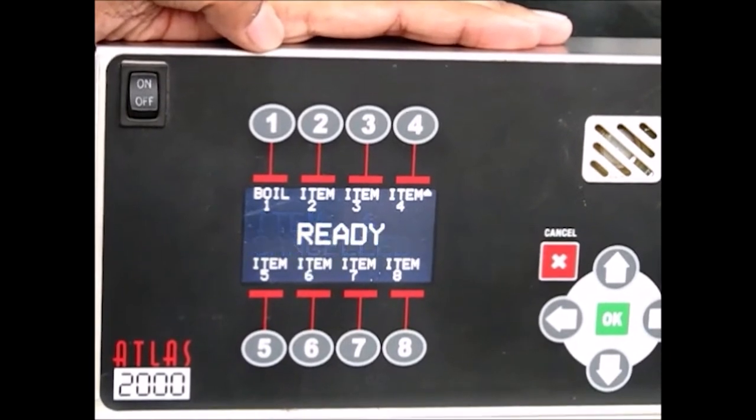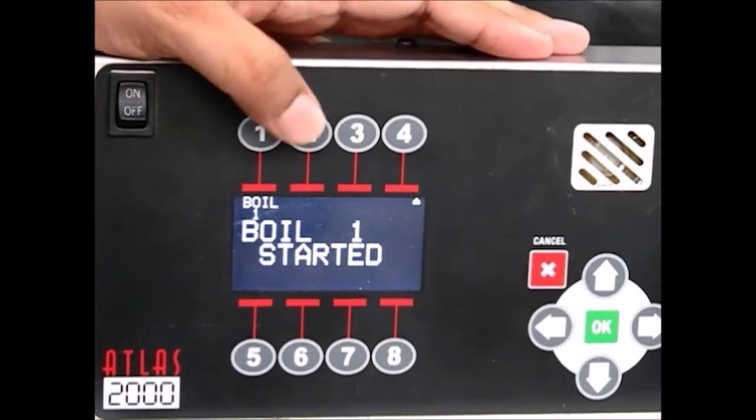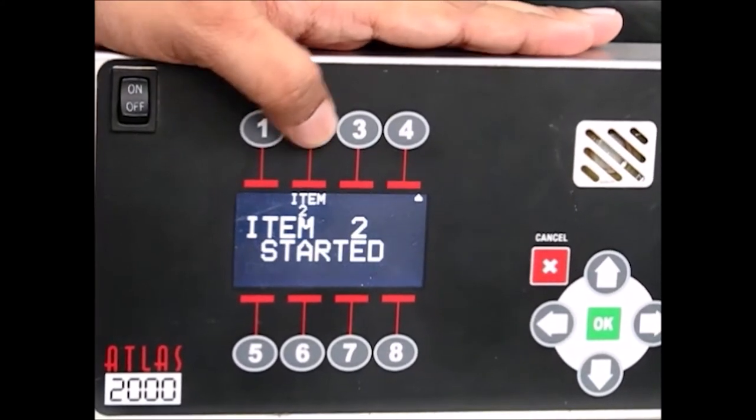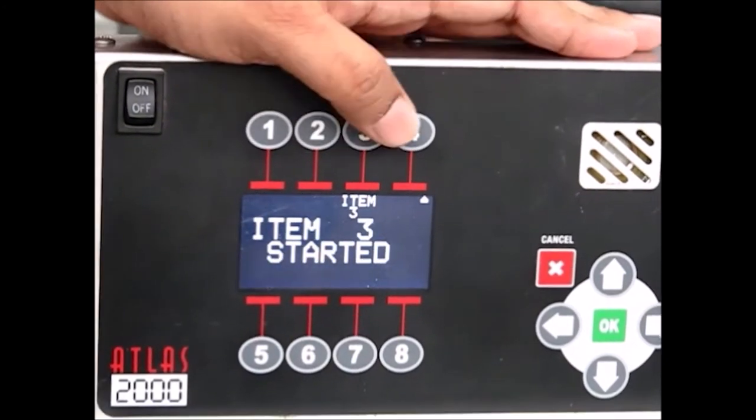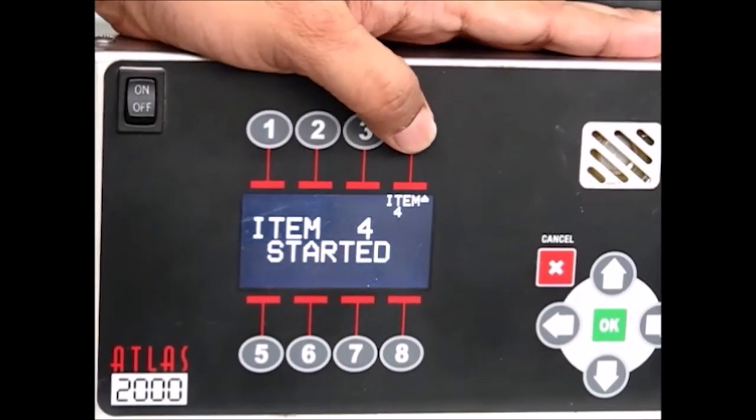To check time left, press buttons 1 through 4, which allows you to start items 1 through 4.